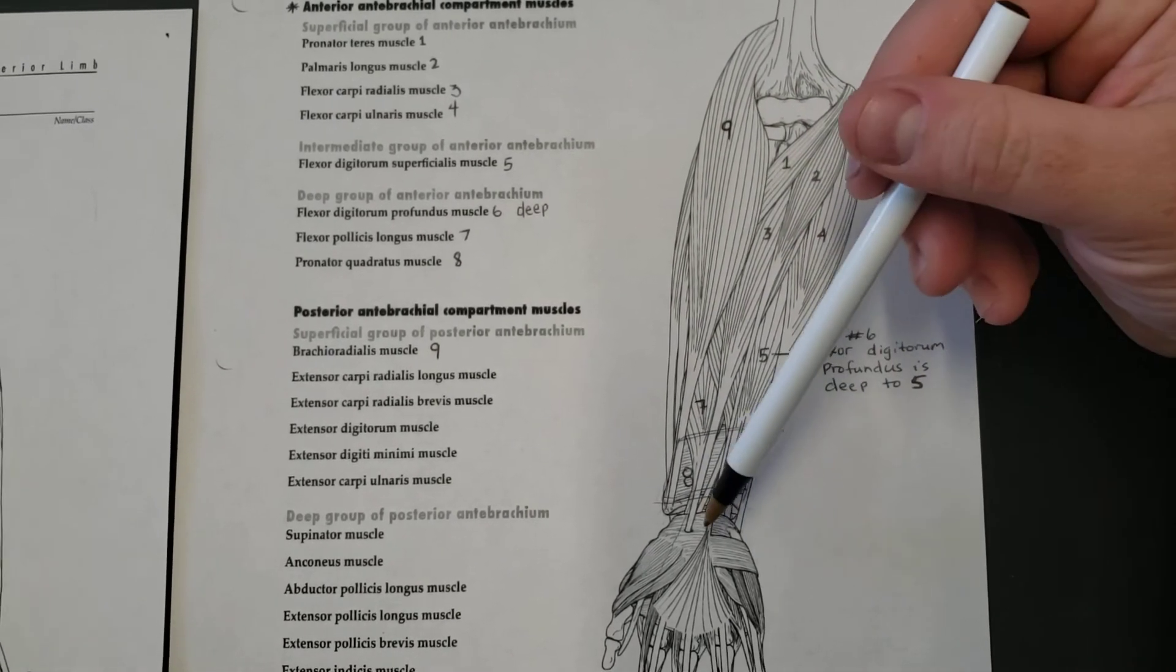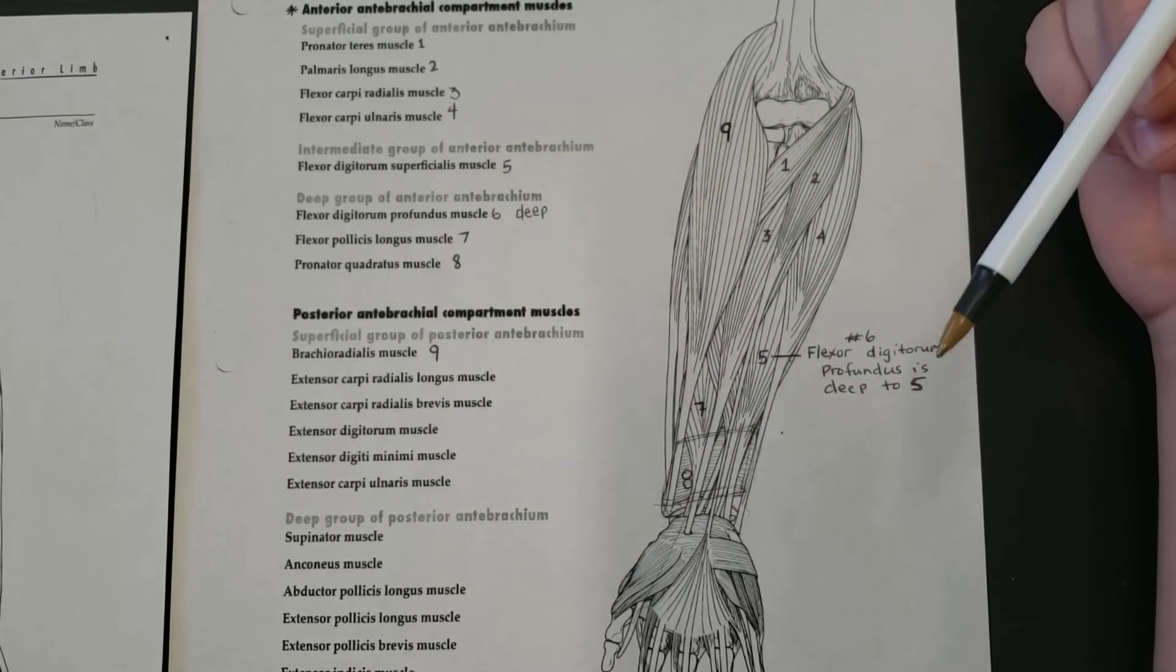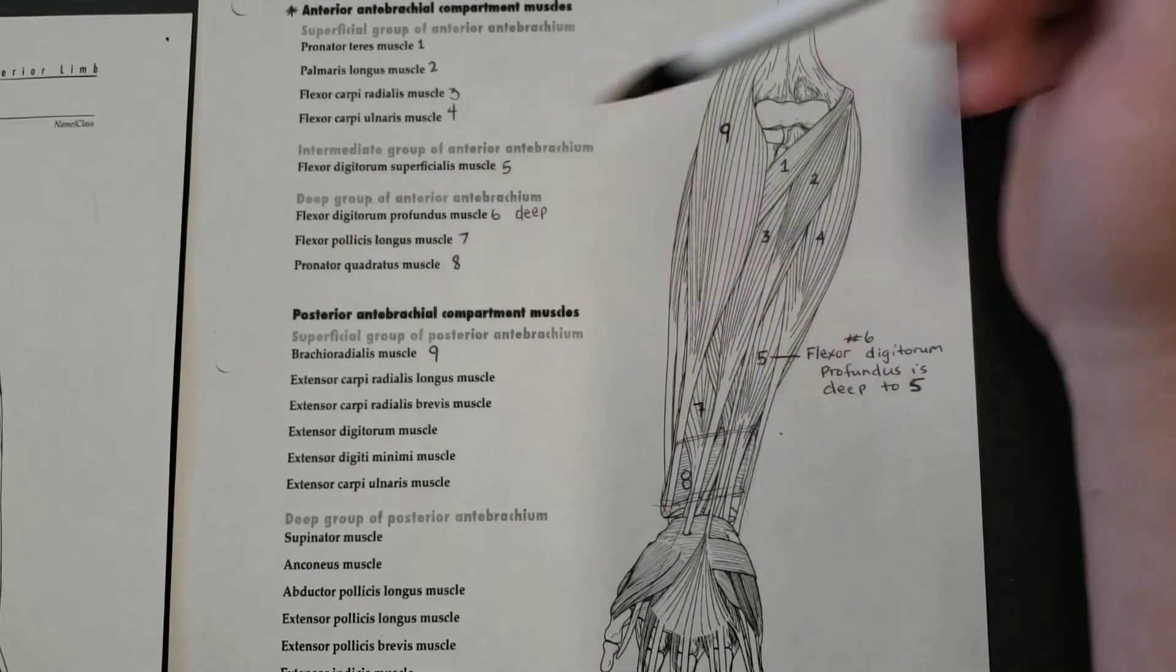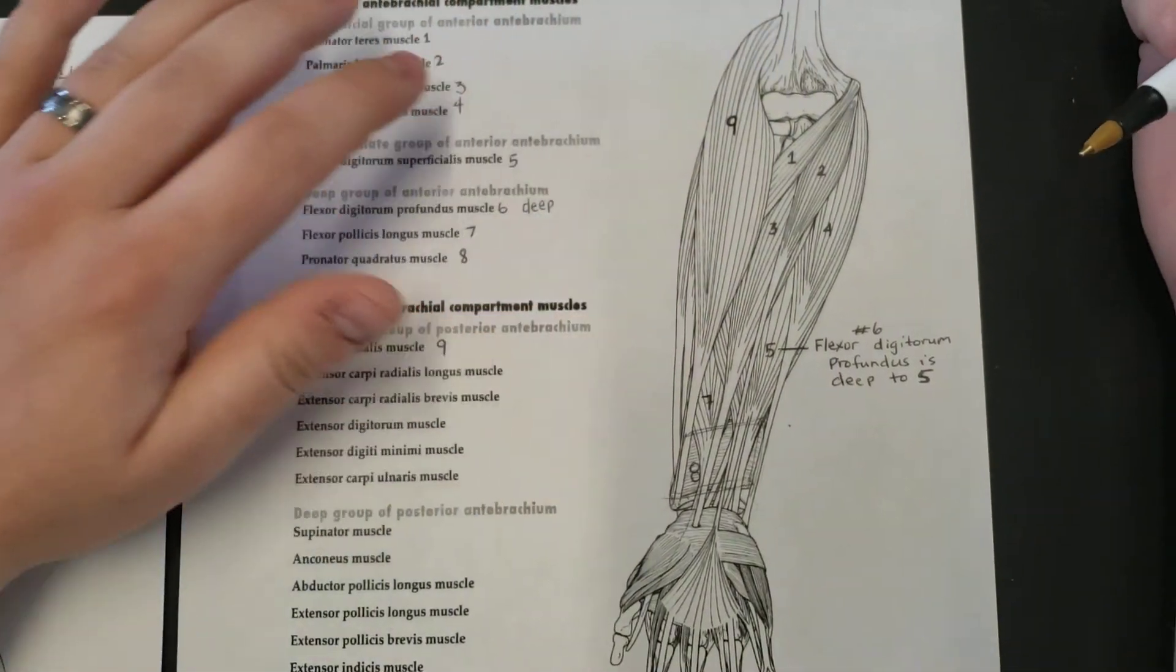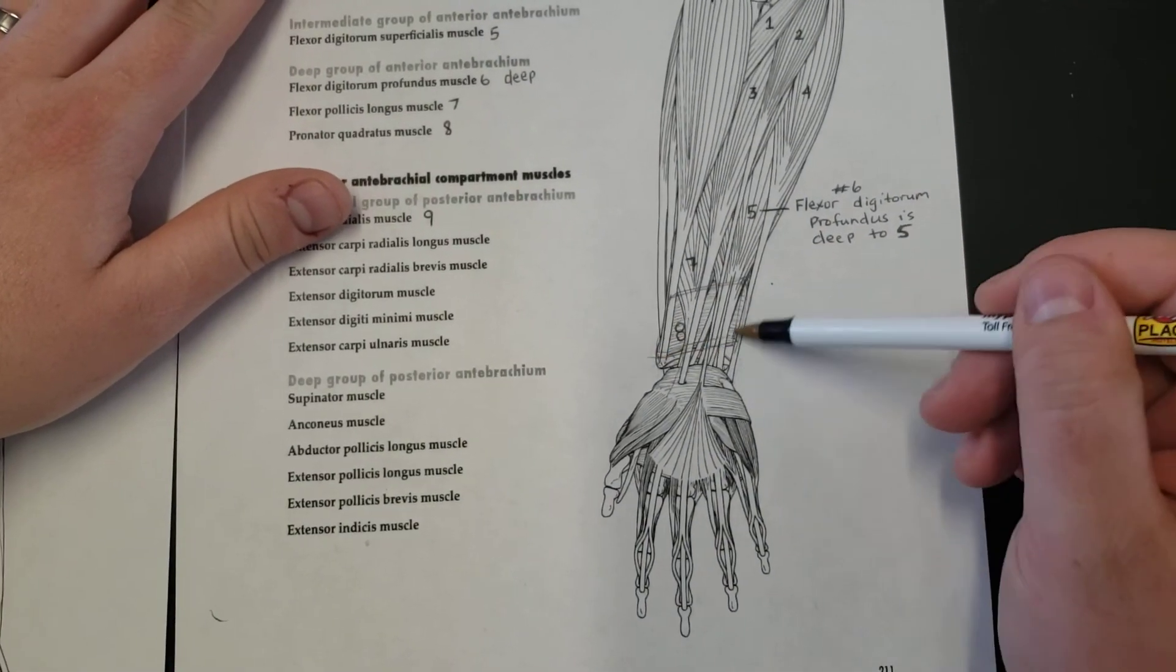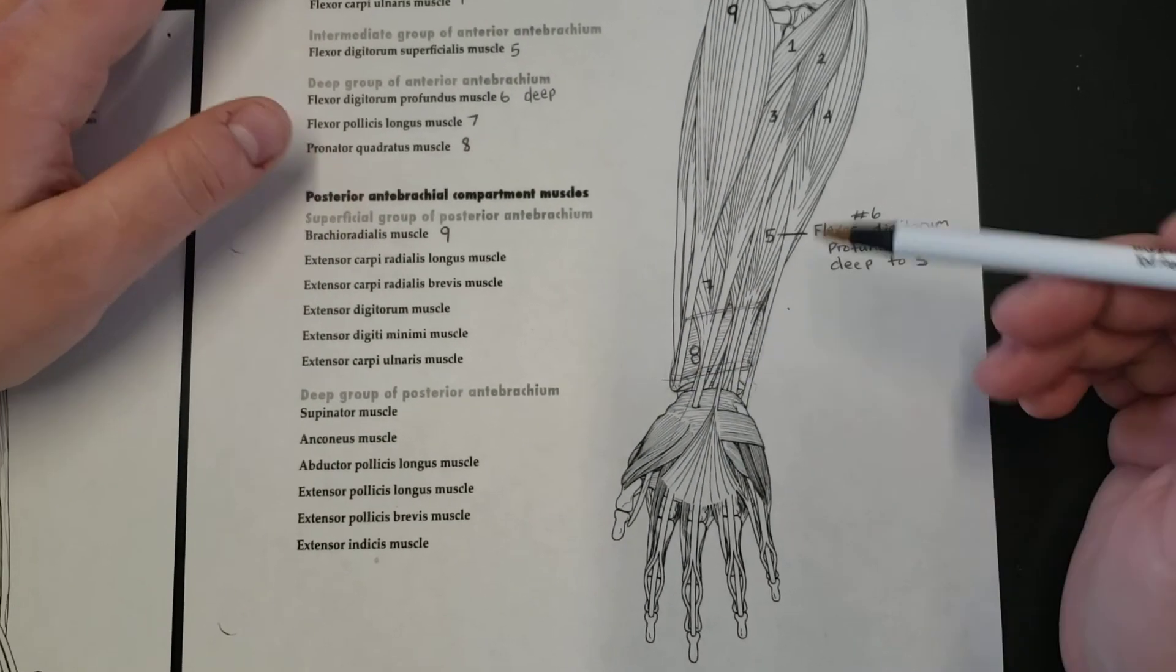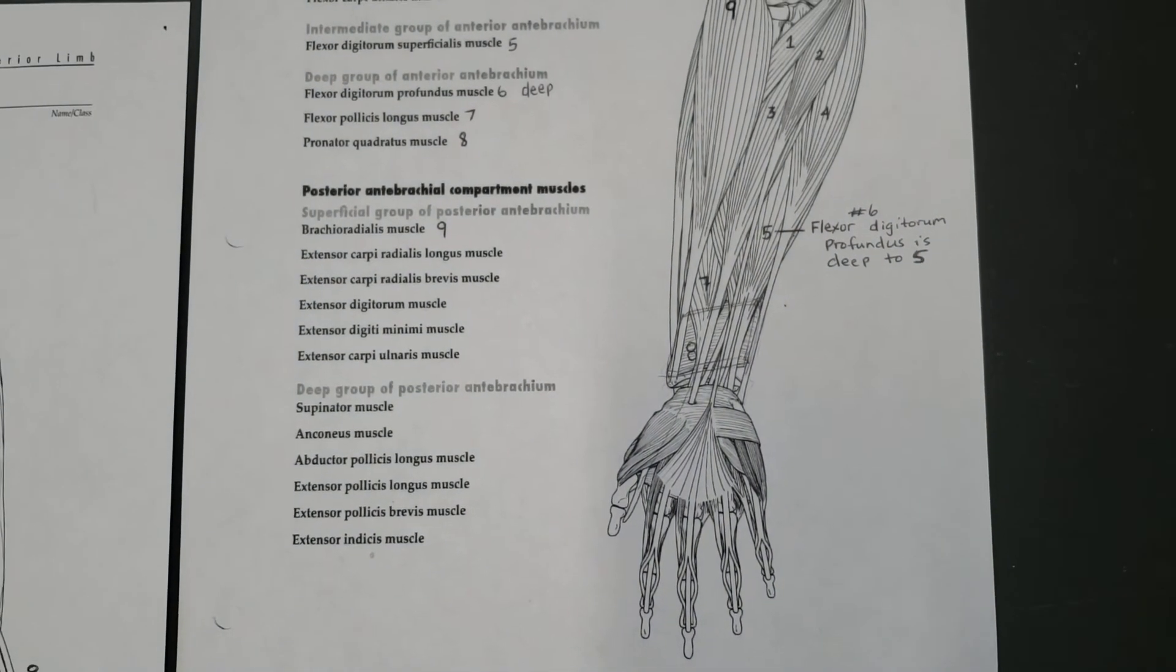When we jump down to number eight we have pronator quadratus. Quadratus just refers to the muscle's shape, meaning that it has four sides, and it pronates, meaning that you're turning from supine to pronation. Number eight, it's underneath everything, it's deep, and thusly we shall name it in the deep group, pronator quadratus muscle.